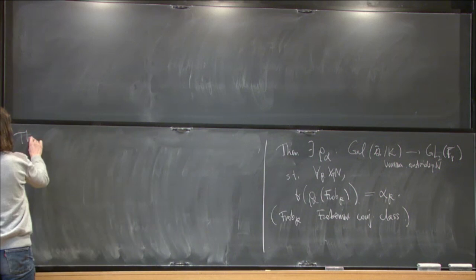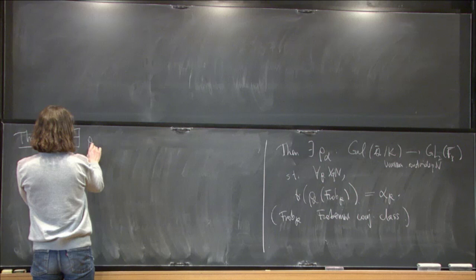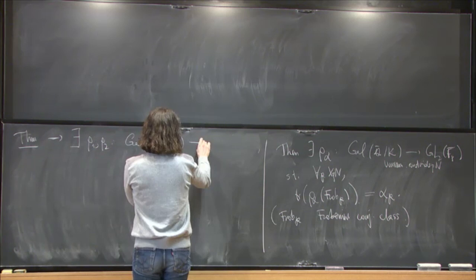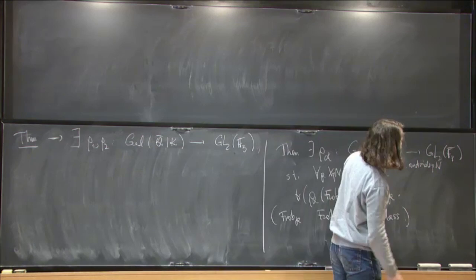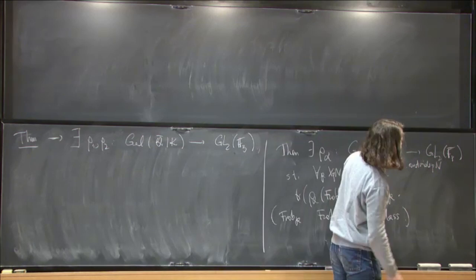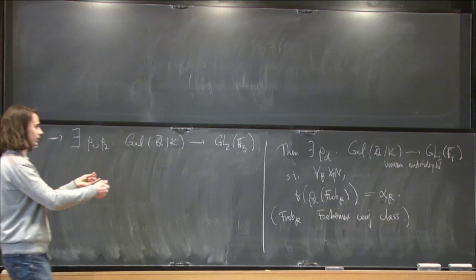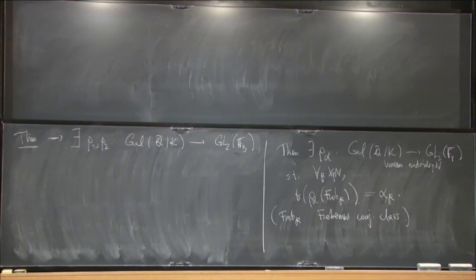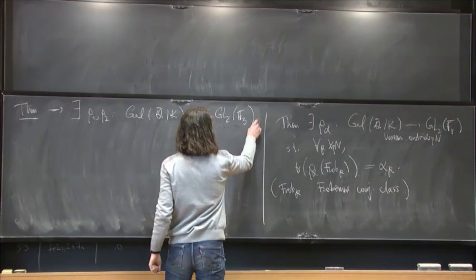So, what does the theorem tell us? So, the theorem implies that there should exist somewhere representations rho i, rho one, and rho two of the absolute Galois group with values in GL2 F3. A priori in GL2 F3 bar, but because it appears that, well, in this case it's actually true that all these alphas will lie in F3. So, the trace is always in the subfield F3. And this implies that also the representation is defined over F3 already. So, we get representations actually into GL2 F3.